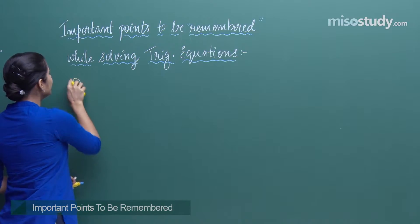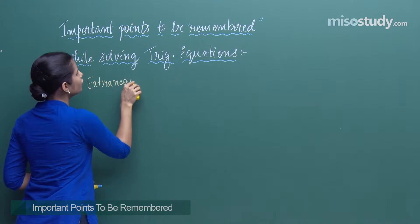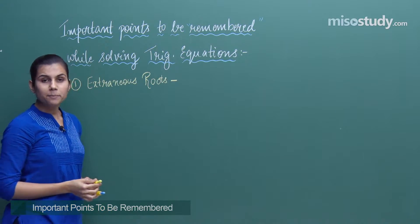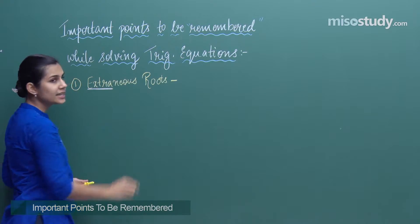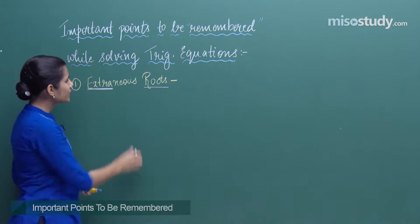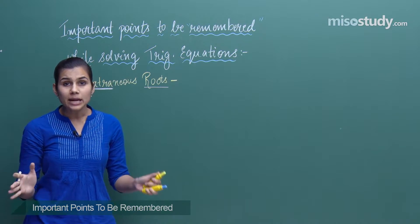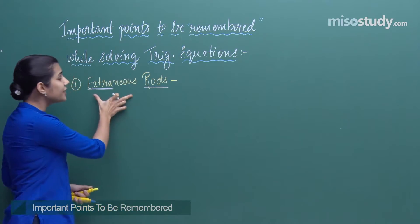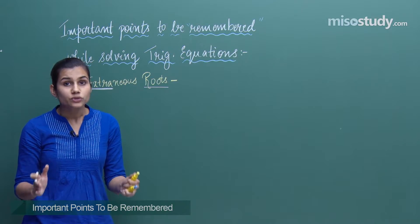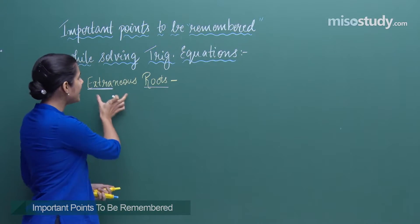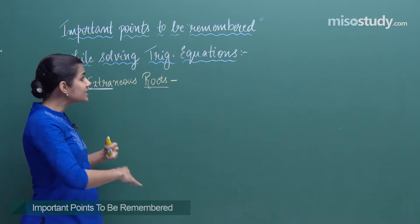The very first point deals with something known as extraneous roots. What do I mean by extraneous roots? The name already suggests 'extra' and 'roots.' Extraneous roots can be understood as extra roots — more roots than we should have. That means the number of roots exceeds what we actually require.